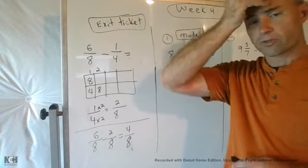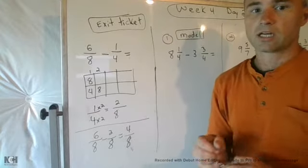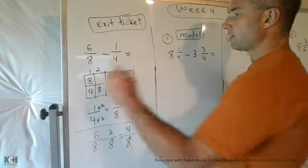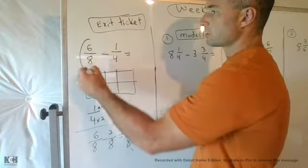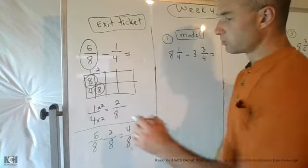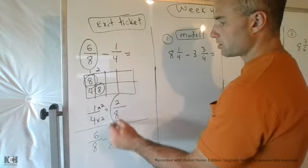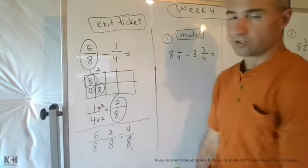Okay, so we have 6/8 minus 1/4, which was yesterday's exit ticket for day one of week four. You hopefully found the common denominator to be eight, which means I didn't need to change 6/8 at all. Then you turned 1/4 into 2/8 because 4 times 2 equals 8, so you do 1 times 2 to get 2.